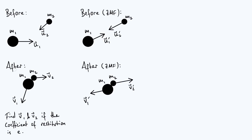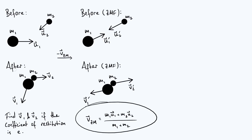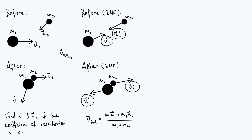To make this transformation from the lab frame to the zero momentum frame, you figure out the velocity at which the zero momentum frame is moving relative to the lab frame and subtract it from all the velocities. This velocity, vzm, is given by the total momentum of the system divided by its total mass. In terms of notation, when transforming to the zero momentum frame, all velocities get a dash: u1 becomes u1 dash, similarly for u2 and the v's. The dash indicates that velocity is measured in the zero momentum frame.